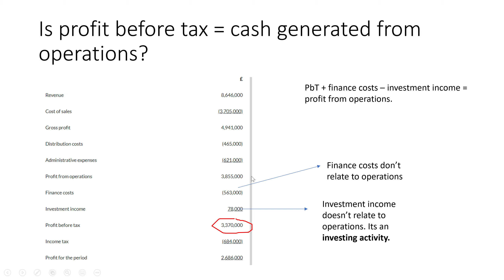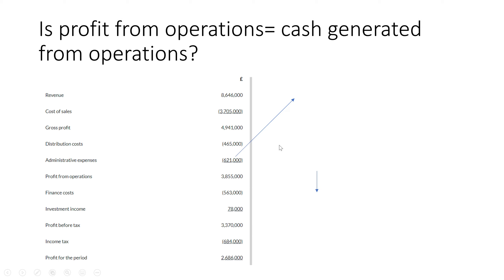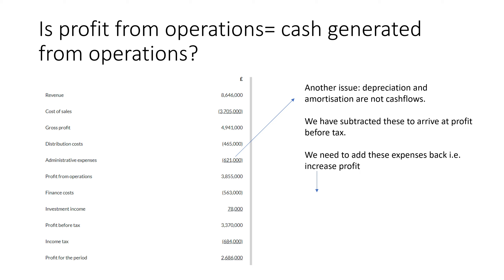Is profit from operations the same as cash generated from operations? No, because admin expenses include non-cash flow items like depreciation and amortization — we've subtracted those to arrive at profit before tax, so we need to add them back. So far we've added back finance costs, taken away investment income, and added back depreciation and amortization.